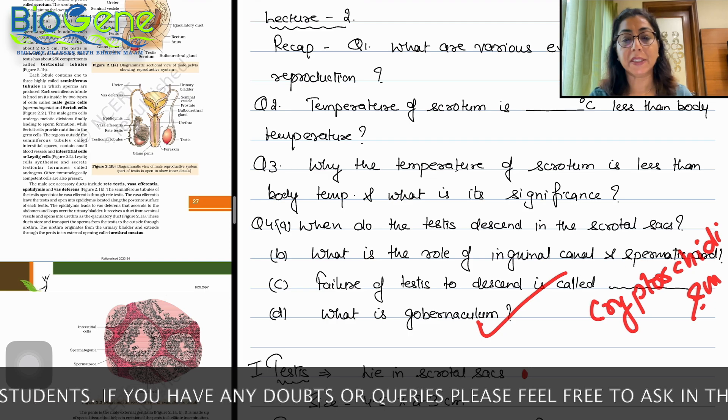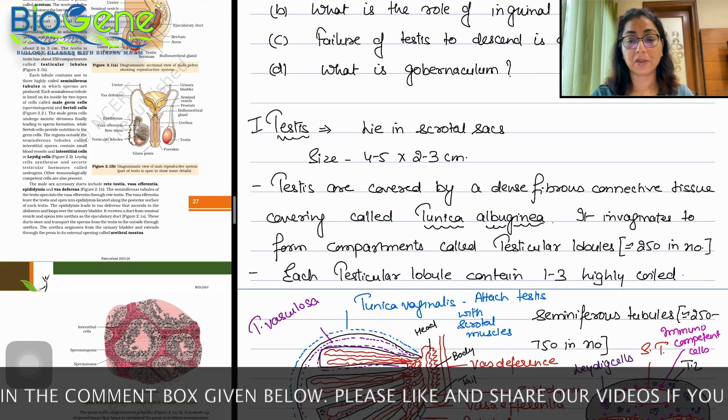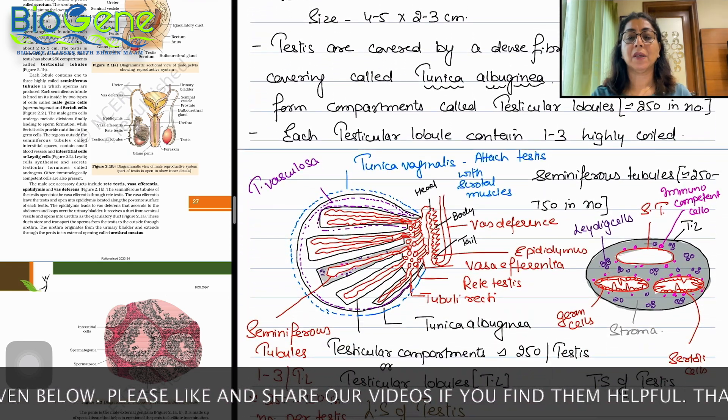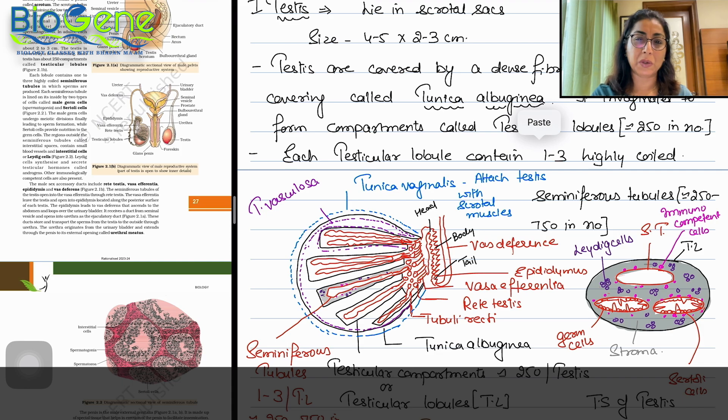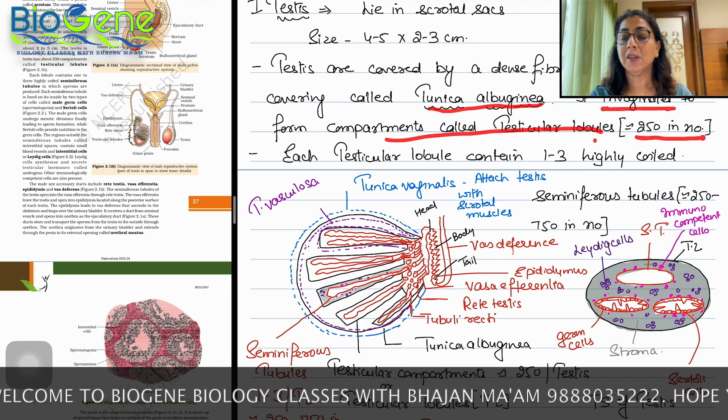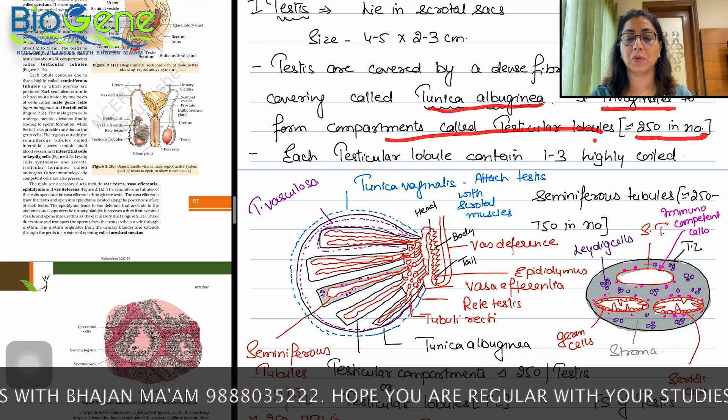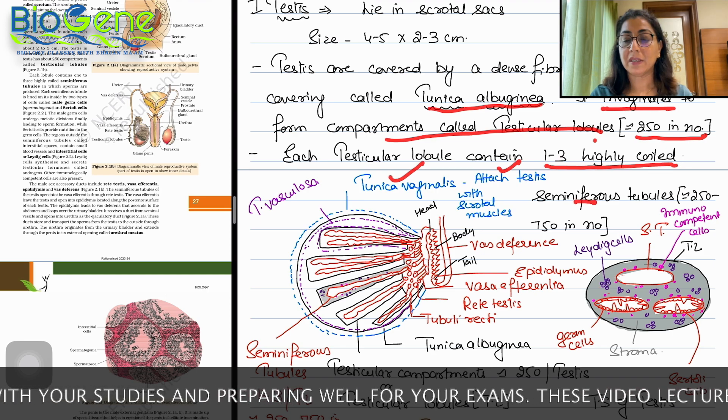What is gubernaculum? Connective tissue pad that helps in the attachment of the testes to the base of scrotum. Now we are going to start with the structure of the testes. Testes lie in scrotal sac. The size of testes is 4 to 5 by 2 to 3 and 1 to 1.5 cm. Testes are covered by dense connective tissue covering called tunica albuginea. It invaginates to form compartments called testicular lobules. In one testis there are 250 approximately testicular lobules.